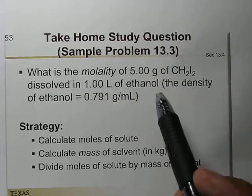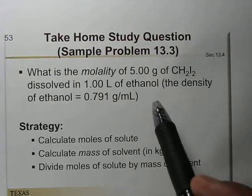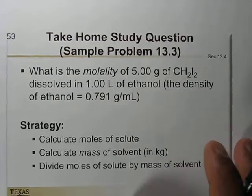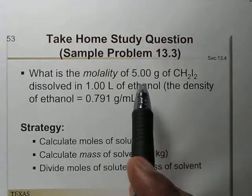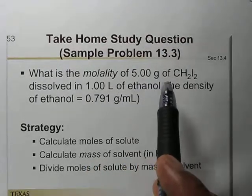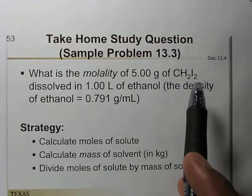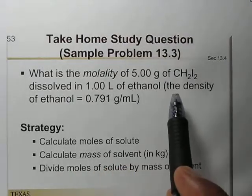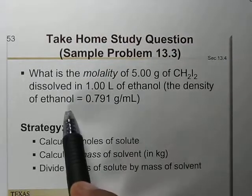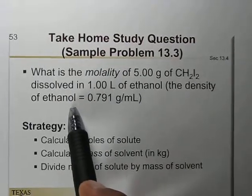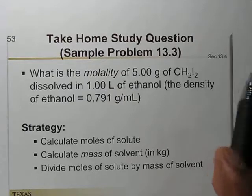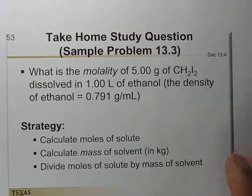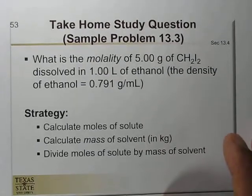Here is one more question for you to solve on your own. The question is: what is the molality of 5 grams of diiodomethane dissolving in 1 liter of ethanol, where the density of ethanol is 0.791 grams per mL?